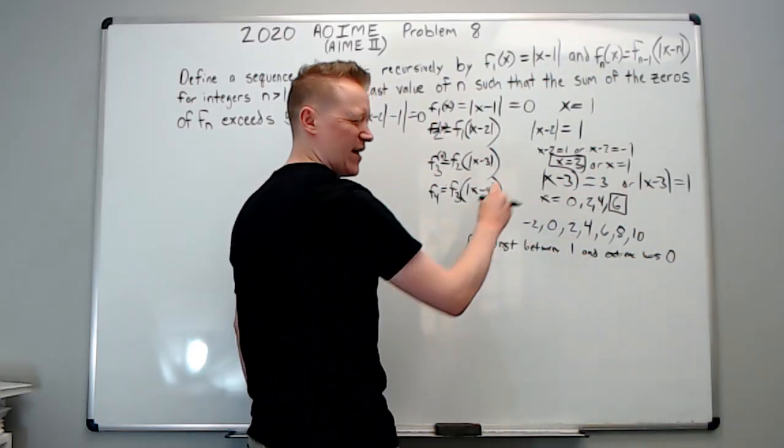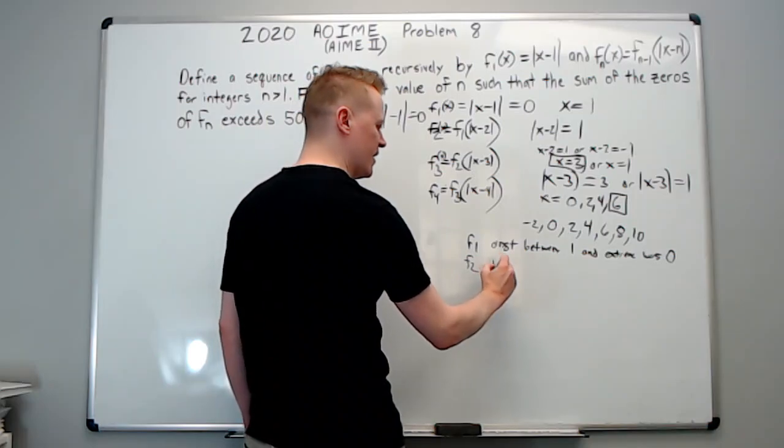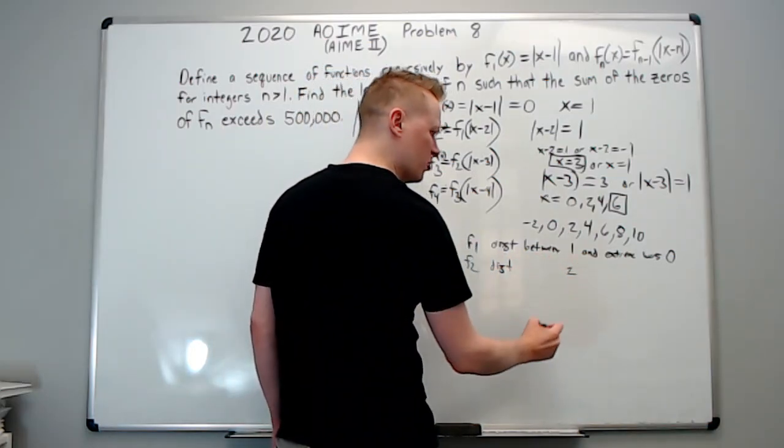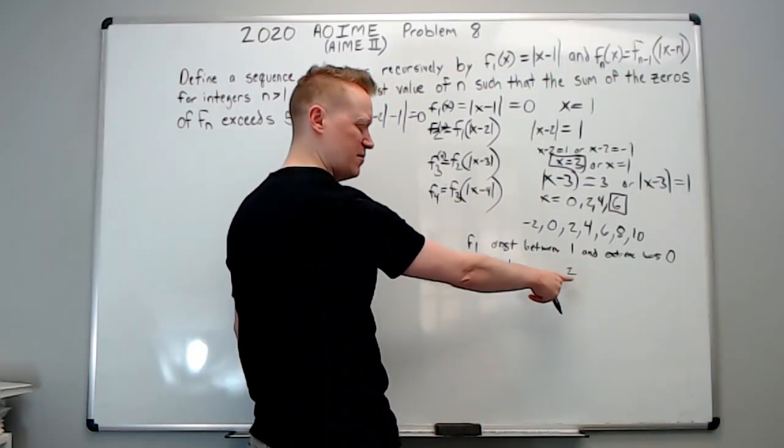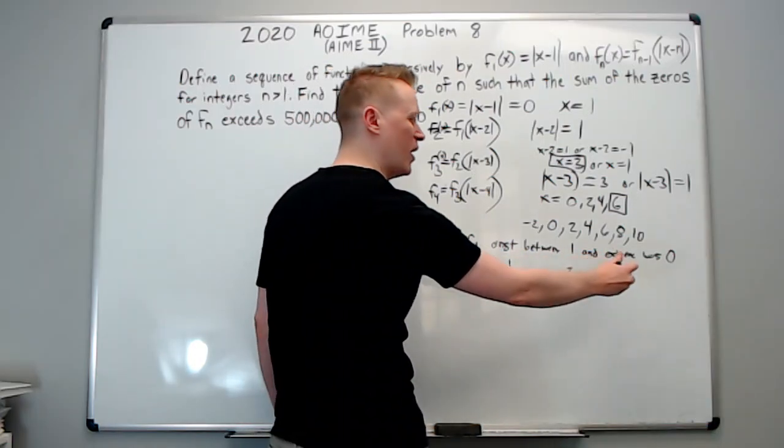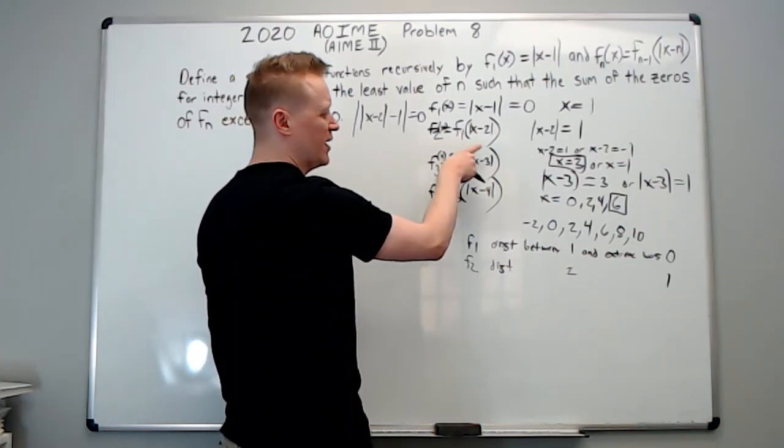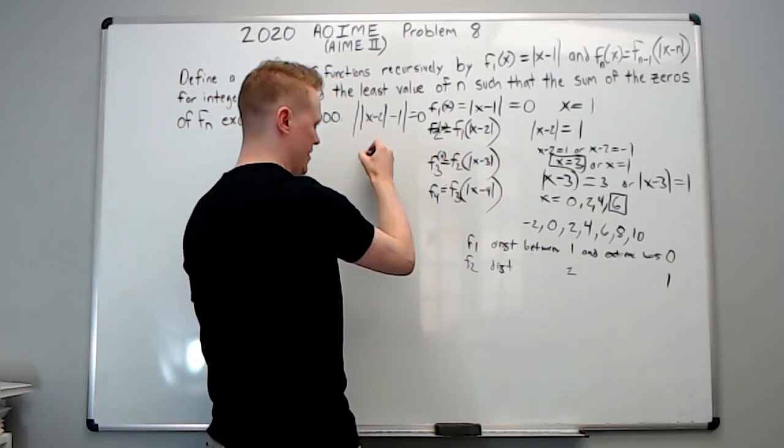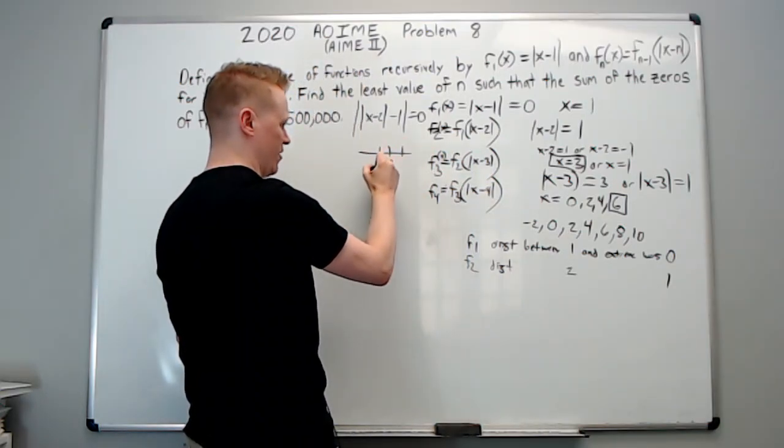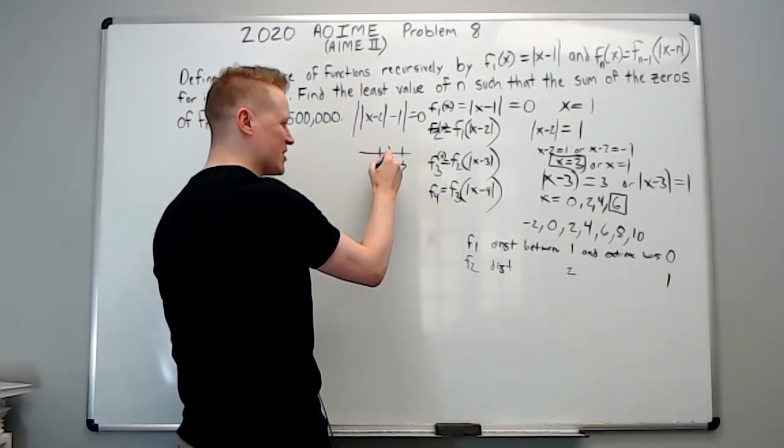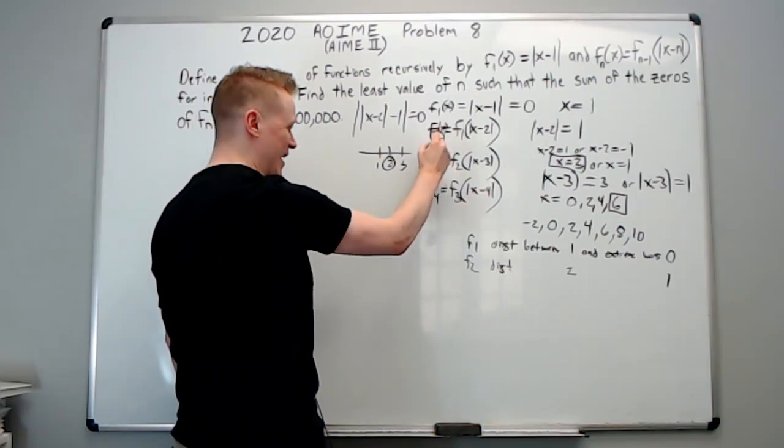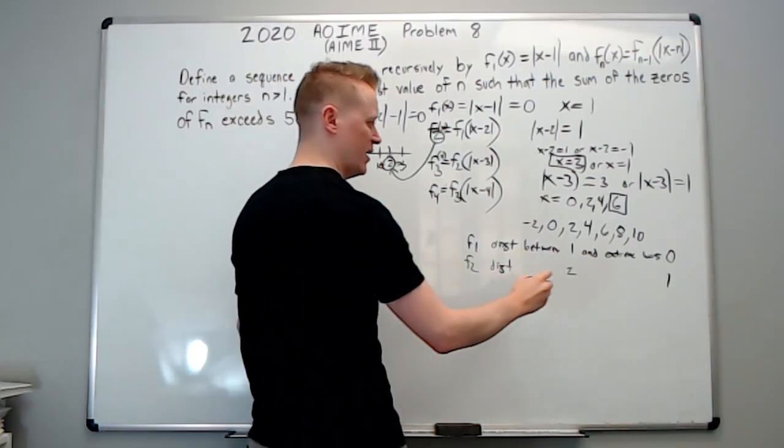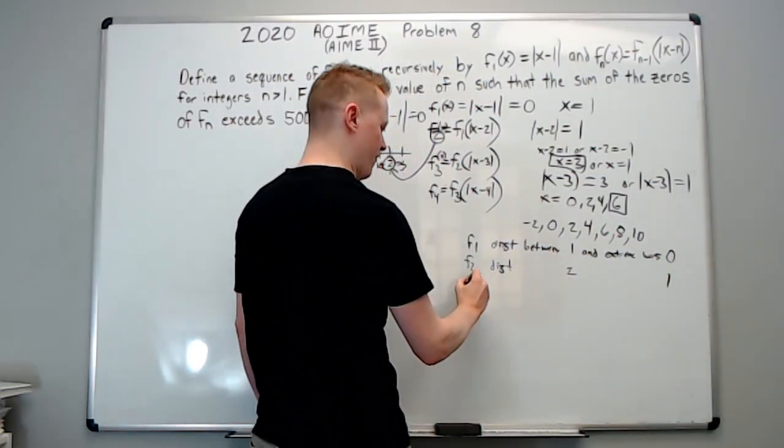F of two, the distance between two, from a number line, two is here, one here, three here. The distance from two, which was this n value, was one on either side, okay? So it was one. For F of three, the distance between three and the extreme values was three. Let's check. If I look at F of three, it was zero, two, four, and six, and from three to zero is three, and from three to six is three. So you see how this is working?